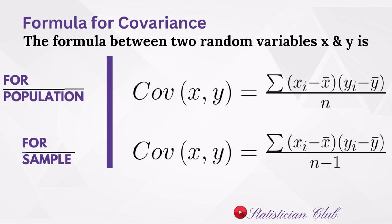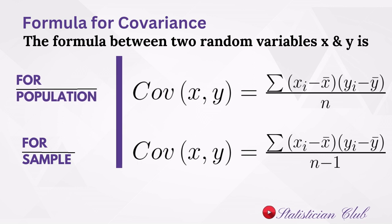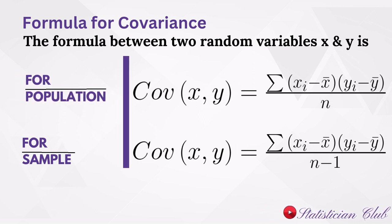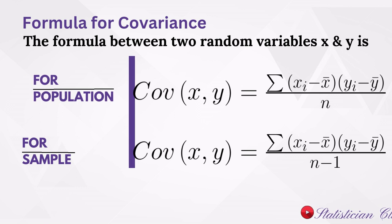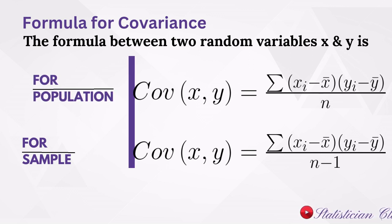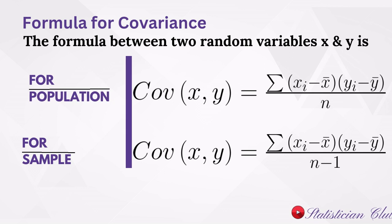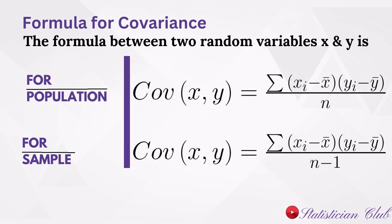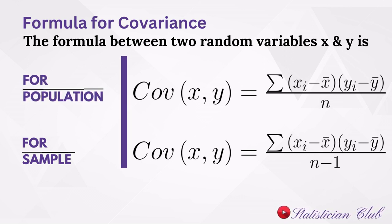Formula for covariance: if you want to calculate a relationship between two variables x and y and your data belongs to a population, covariance is calculated by taking the mean of random variable x, subtracting each value from the mean, and similarly for y — first calculate its mean y-bar, then calculate the difference of each observation from the mean, multiply these two differences, take their sum, and divide by the number of observations n. For sample data, covariance(x, y) = Σ(xᵢ − x̄)(yᵢ − ȳ) / (n − 1).